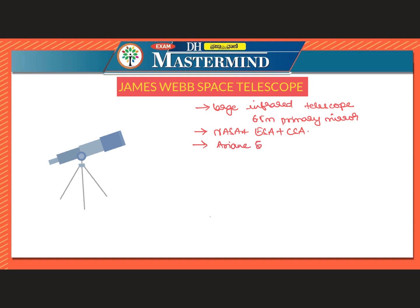The telescope was launched on an Ariane 5 rocket from French Guiana in December. James Webb Space Telescope is going to replace the Hubble Space Telescope, which is NASA's flagship telescope that has been in service for more than three decades.